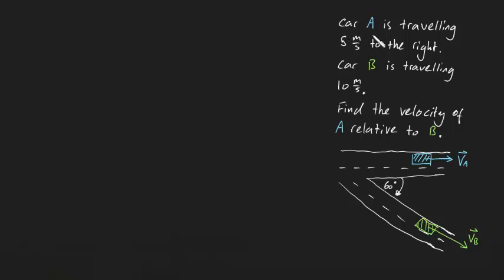G'day guys. Car A is travelling 5 meters per second to the right. Car B is travelling 10 meters per second. Find the velocity of A relative to B.